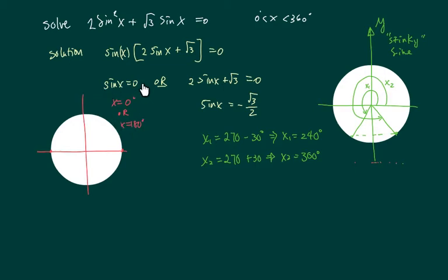Moving over here, sine x equal to 0, we're looking for y value, remember the stinky sine. So y value is over here. It could be either x equal to 0 or all the way over here, 180. Now since we're given or asked to have x restricted between 0 and 360, there's no equal sign over here on 0.